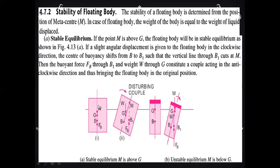The next point is stability of a floating body. The stability of a floating body is determined from the position of the metacenter M. In the case of a floating body, the weight of the body is equal to the weight of liquid displaced. The first condition is stable equilibrium: if the point M is above G, then the floating body will be in stable equilibrium, as shown in figure A.